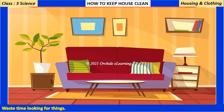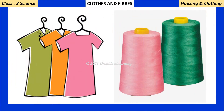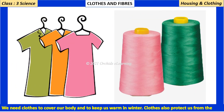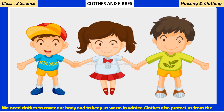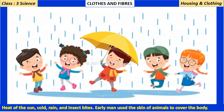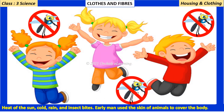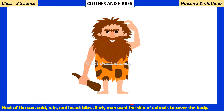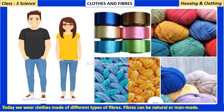Clothes and fibers: we need clothes to cover our body and to keep us warm in winter. Clothes also protect us from the heat of the sun, cold, rain, and insect bites. Early man used the skin of animals to cover the body. Today we wear clothes made of different types of fibers.